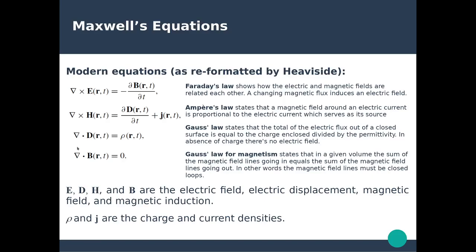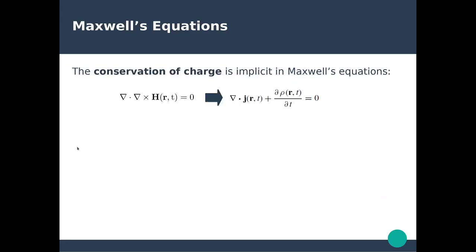With that in mind, we can start working with these equations and re-derive some of the equations Maxwell introduced in his original paper. The first is conservation of charge, which is implicit in Maxwell's equations. If you take the divergence of Ampere's law — the second equation shown earlier — what you obtain is the conservation of charge, which is one of the equations Maxwell introduced in his original 1860s paper.